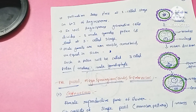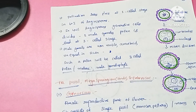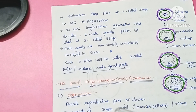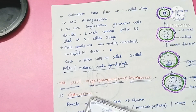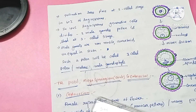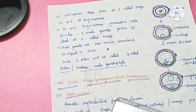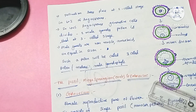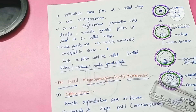So the structure of the anther, microsporogenesis, and pollen grain development are now complete. In the next class, we will study about the pistil, megasporangium, and embryo sac.